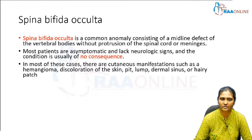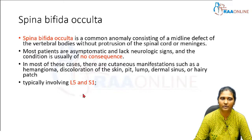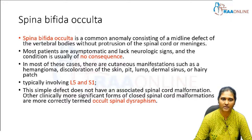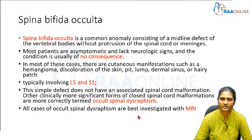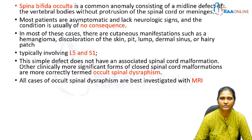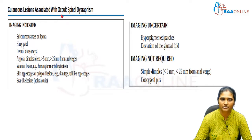In most cases, there are dermal or cutaneous manifestations — such as a hemangioma or skin discoloration, a pit or small lump, a dermal sinus, or a hairy patch in the back. It typically involves the L5 and S1 area. The simple defect does not have associated spinal cord malformation. Clinically more significant forms are termed occult spinal dysraphism, for which MRI is the best mode of investigation.